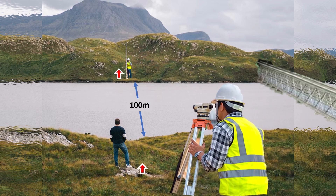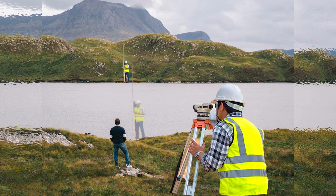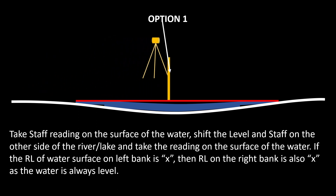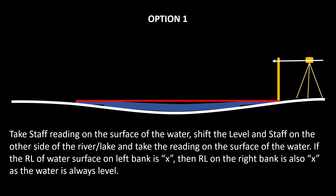Say you are tempted to shoot across the river. You can, but you need to apply some correction. Or you can take the height of the water surface closest to you and, assuming water always stays level, you can cross the river and take a reading of the water surface on the opposite bank — but here also you need to apply some correction.